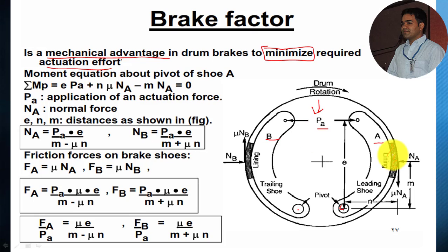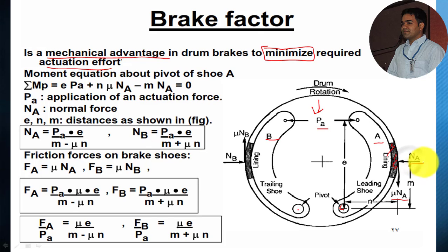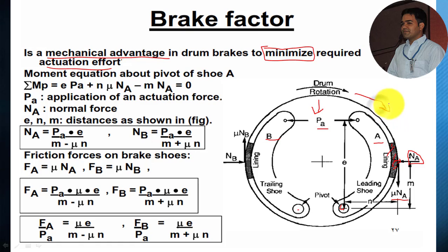Apart from this actuation effort, the friction force equals the normal reaction times the coefficient of friction — mu times N — indicating the friction force. Na indicates the normal direction force produced due to the brake force applied at this surface. In this case we consider the rotation of the wheel or the rotation of the drum to be in the clockwise direction.